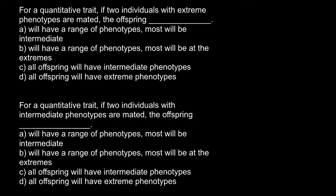Hi, this video is going to be about quantitative genetics at a very beginning level. Here is the first question: for a quantitative trait, if two individuals with extreme phenotypes are mated, what do the offspring look like? Here are four answers to choose from. You may stop the video here and try to choose the correct answer, then run the video again to compare your answer with my explanation.